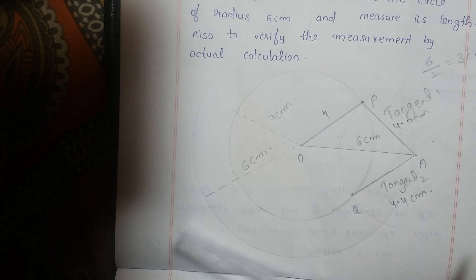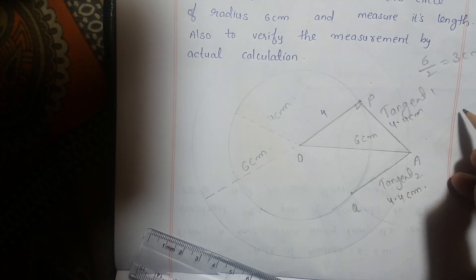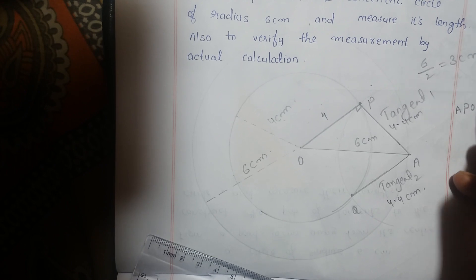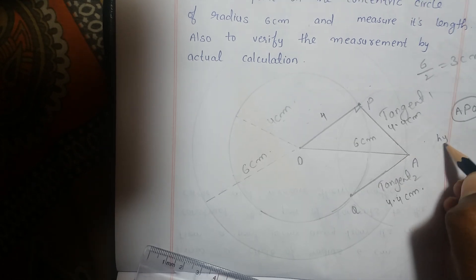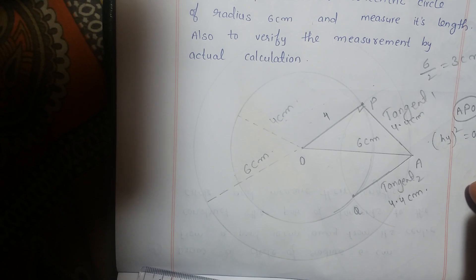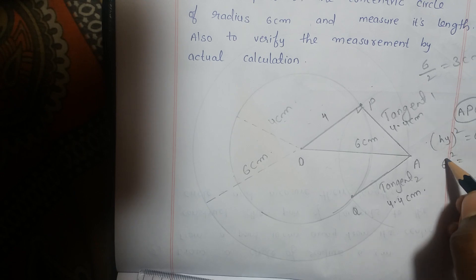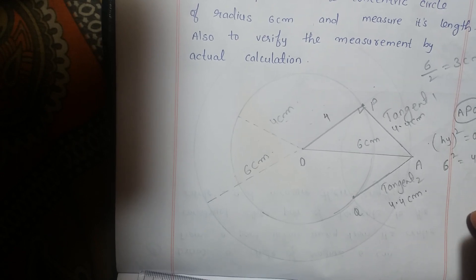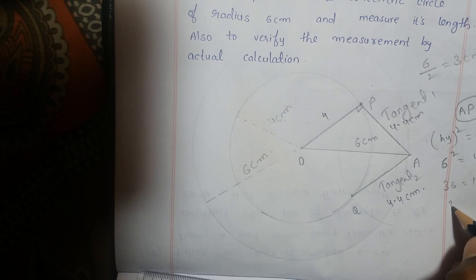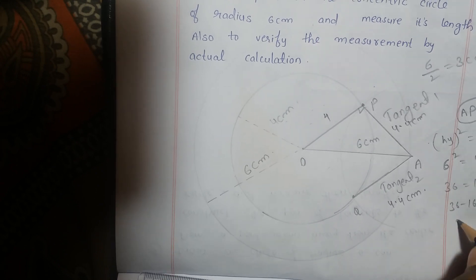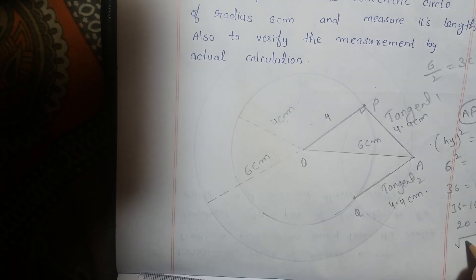Now verify using the formula. Triangle OAP is a right angle triangle with the right angle at P. By the Pythagorean theorem: hypotenuse squared equals opposite squared plus adjacent squared. So OA² = OP² + AP², giving 6² = 4² + AP². That is 36 = 16 + AP², so AP² = 36 − 16 = 20.